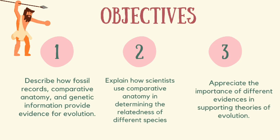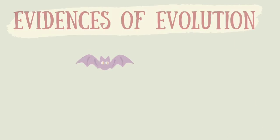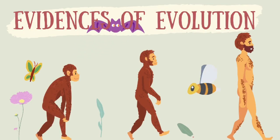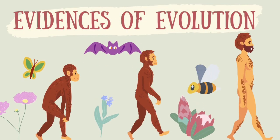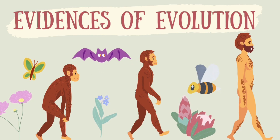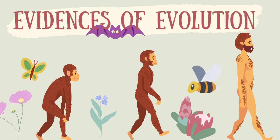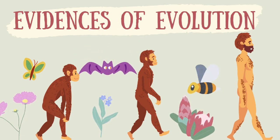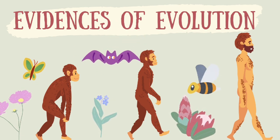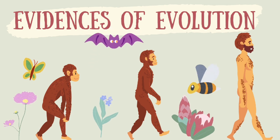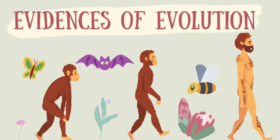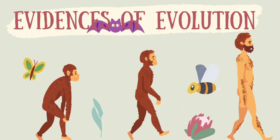These are our objectives for today. Do you know why dinosaurs no longer exist today? Why were some animals before very different from the animals we have now? Organisms inhabiting the Earth have changed over time. Their structures, traits, and abilities allow them to adapt and survive in their environment.